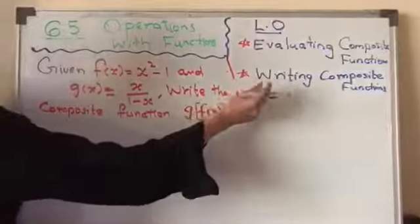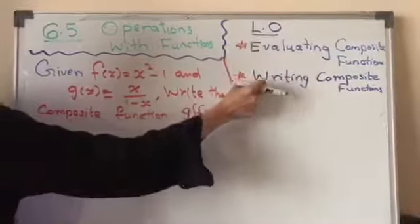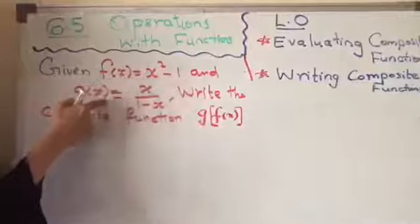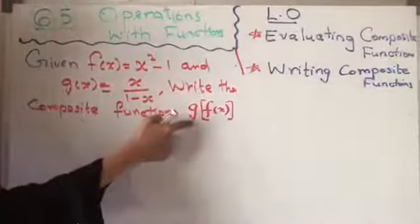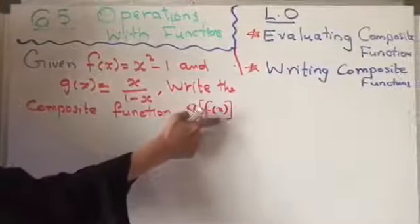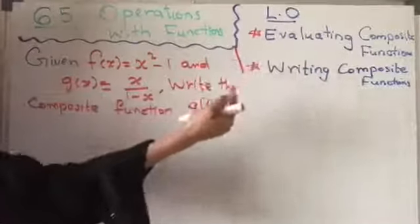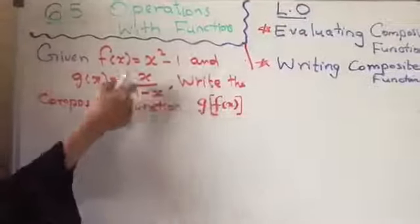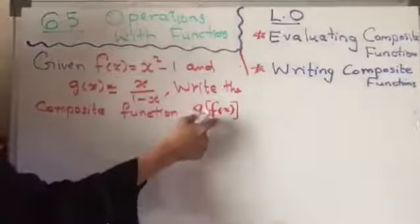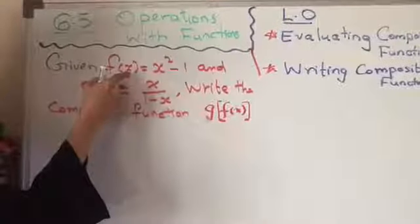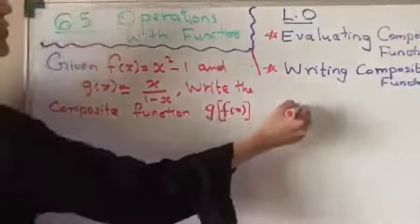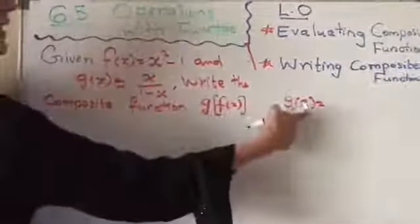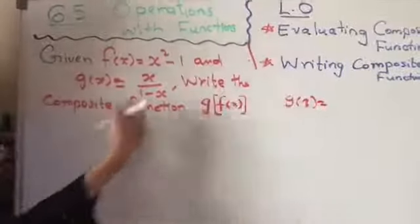Now we move on to another objective. Our next objective is going to be writing a composite function. Look at that example: f(x) is x square minus 1, and you have to find g of fx. This time, you don't have a number. You are not going to evaluate. You are going to write an expression. So you're going to get another function, the third one, which is the composition of these two functions. Let's begin. f of x is the whole thing. So if you have g of 3, you will look at g. Wherever x is there, you will substitute 3.